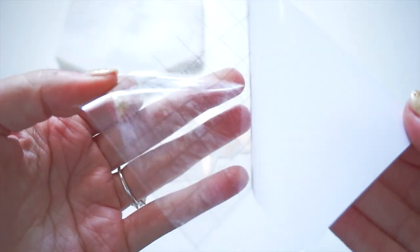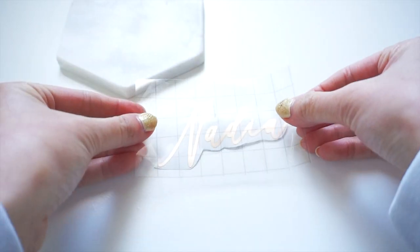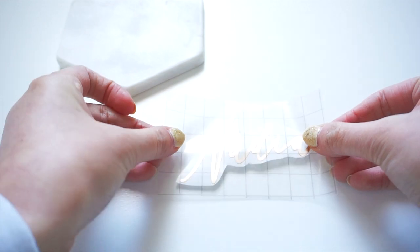The transfer vinyl I prefer to use is the Cricut brand because it's transparent and the grid lines help you align the design to your coaster.